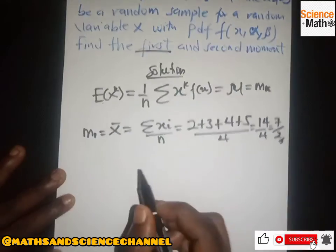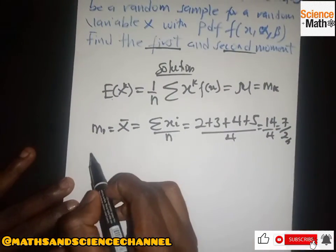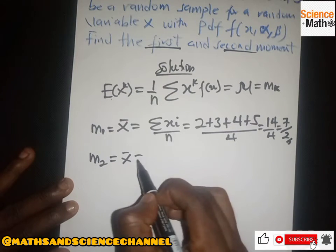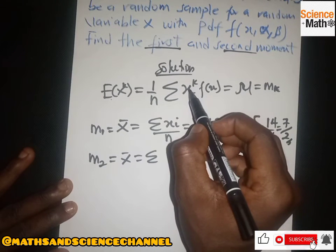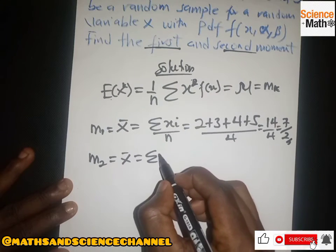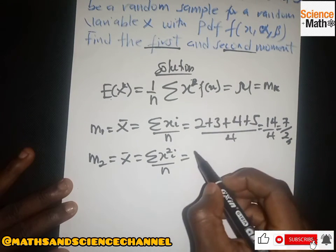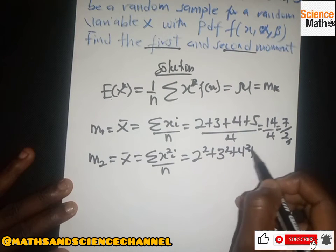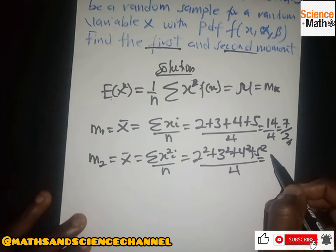The second question says we should find the second moment. The second moment is basically m2, equal to the mean, but in this case we are increasing k to 2, so we have X squared. We have 2 squared plus 3 squared plus 4 squared plus 5 squared over 4, and we get 27 over 2.